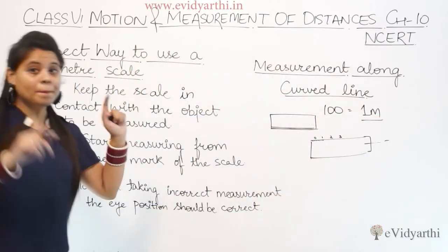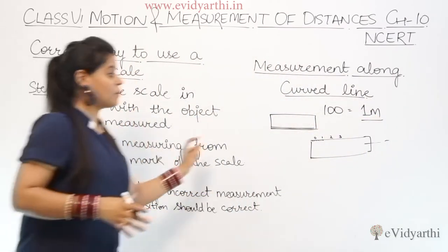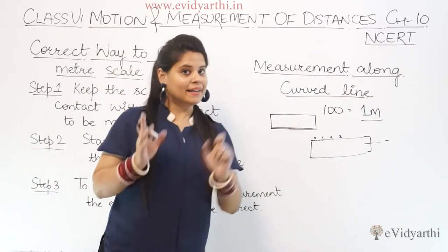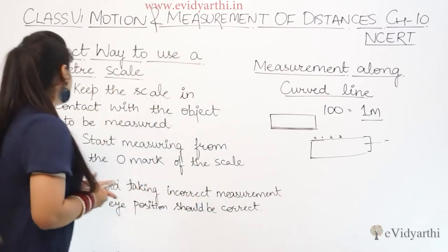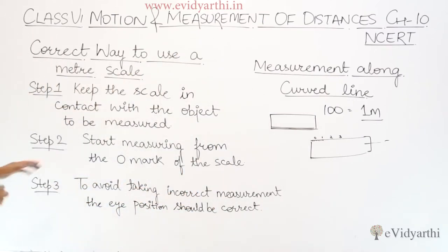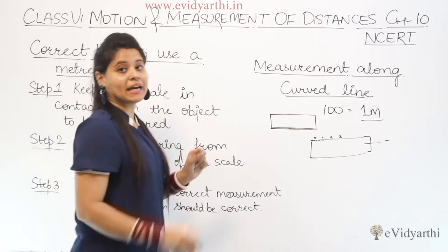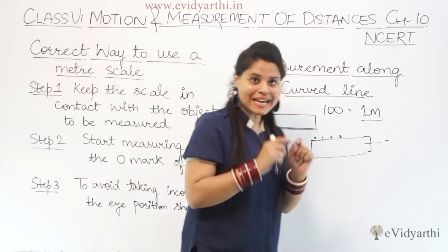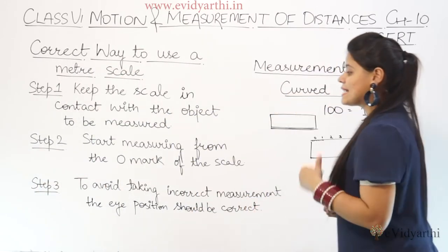We are talking about the meter scale. 100 centimeters make one meter. Now, moving to step 2 — we have seen that measuring starts from the 0 mark.